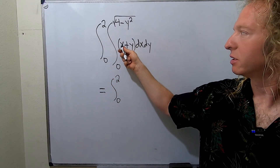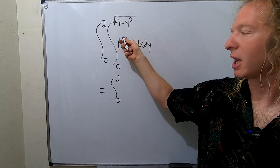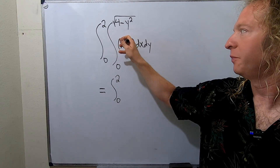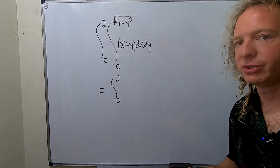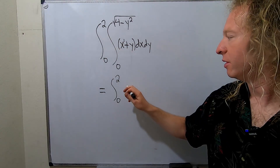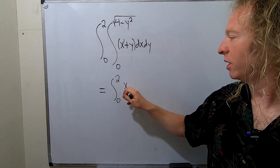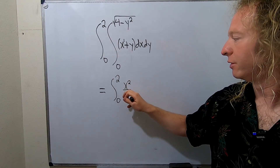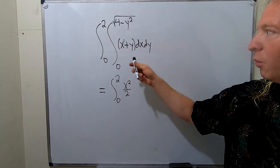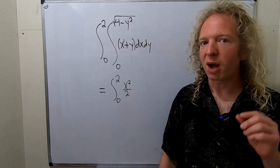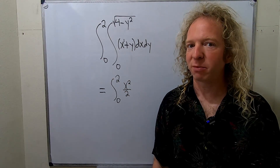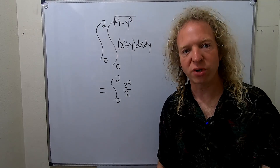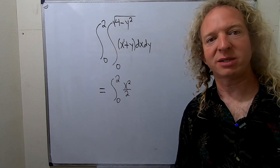When you integrate X you get X squared over 2, because there's a 1 here so you use the power rule. So you have X squared over 2. When you integrate the Y you have to put an X next to it because you're treating Y as a constant.